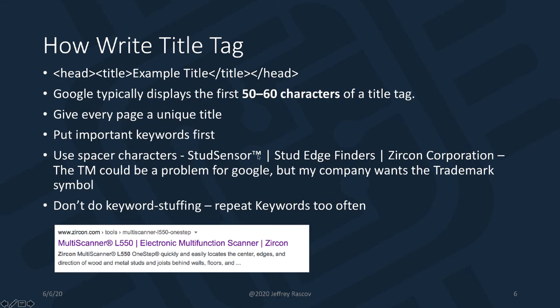There's a TM for trademark here. Google sometimes can get around it, but it could also be a problem. Of course my company wants the trademark there — you've got to keep your trademark, because if you don't use your trademark symbol, other people can take it. You might want to avoid that if you can. And the last thing as far as writing a title tag: don't do keyword stuffing or repeat words. I wouldn't want a title that says 'stud finder, stud finder, Zircon stud finder, best stud finder.' That would be too much keyword stuffing. So keep that in mind.